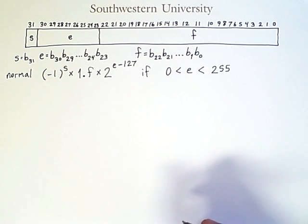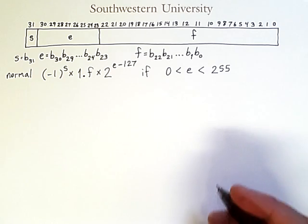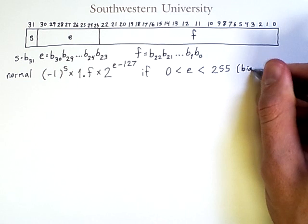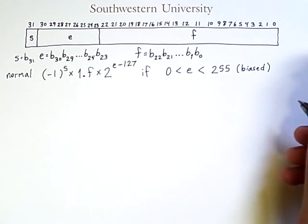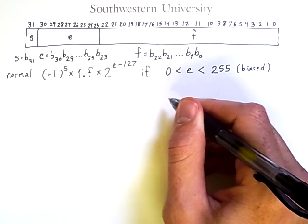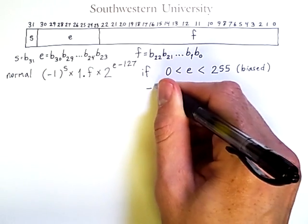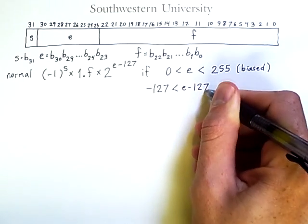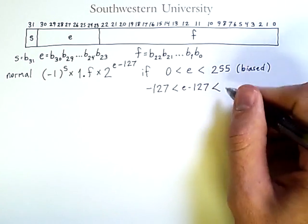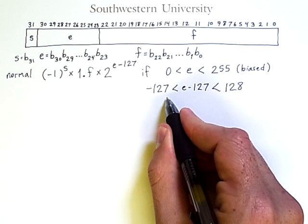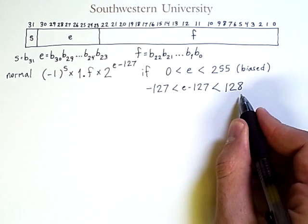This differs a bit from the discussion in the previous video. First, note that E is the biased value, and so the unbiased value, or the range of actual exponents we represent, is E minus 127. So that means that the actual exponent we can represent, E minus 127, is going to be greater than negative 127 and less than 128.